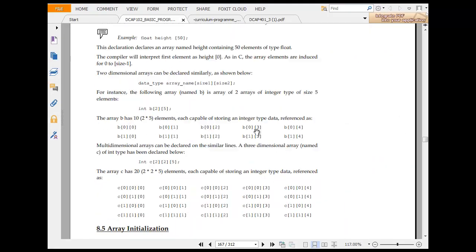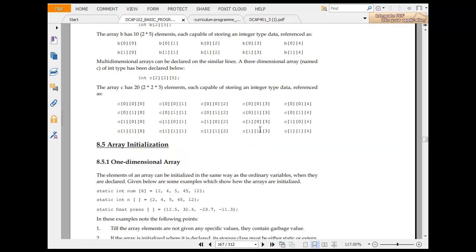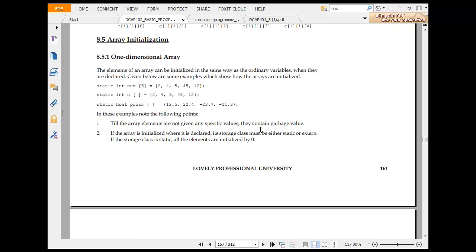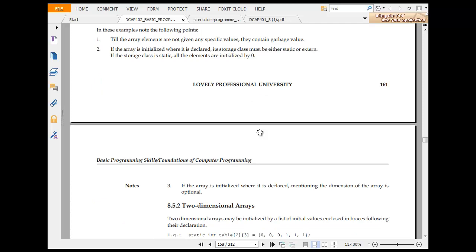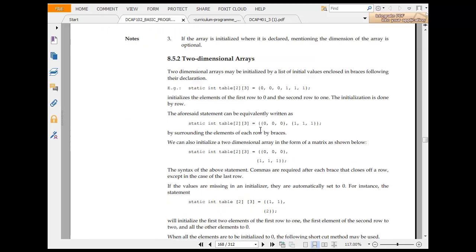Now array declaration. So float height 50, data type size 1, size 2 and so on. Array initialization. An element of an array can be stored in the same way as the ordinary variable while they are declared. Given below are some examples. Static integer num 6, static integer n, static float crash. Still the array elements are not given and they contain garbage or some arrays to zero.